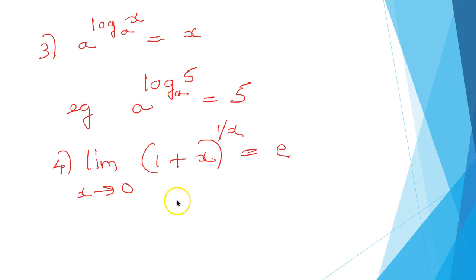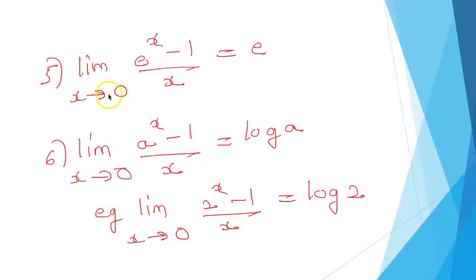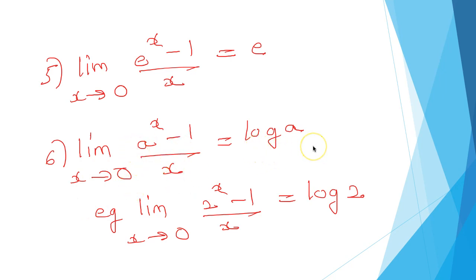The limit as x tends to 0 of (1 plus x) whole raised to 1 by x equals e. This is a property of limits very useful in calculus. Limit as x tends to 0 of (e raised to x minus 1) divided by x equals 1. As a corollary, limit as x tends to 0 of (a raised to x minus 1) divided by x equals log a. So limit as x tends to 0 of (2 raised to x minus 1) divided by x equals log 2.